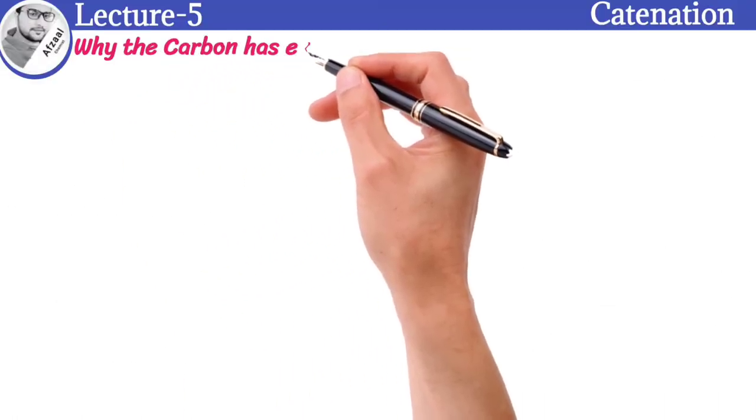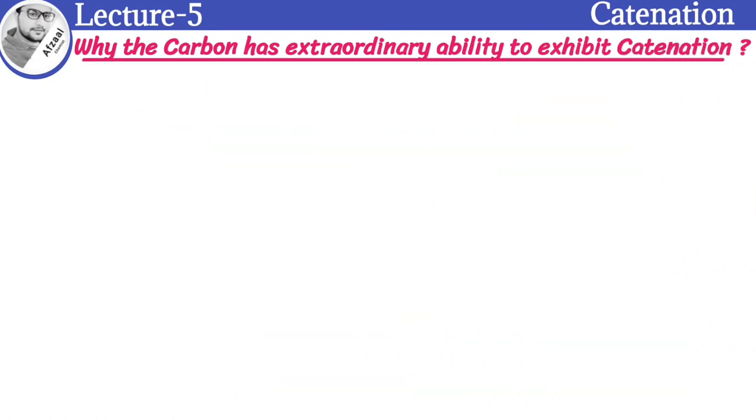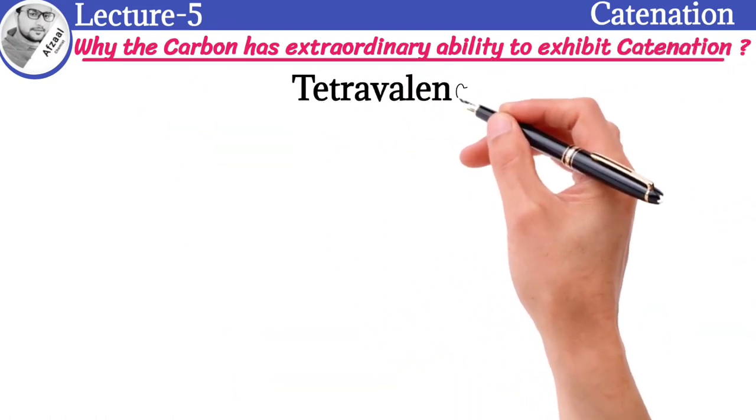Why does carbon have extraordinary ability to exhibit catenation? The extraordinary ability is because of tetravalency.